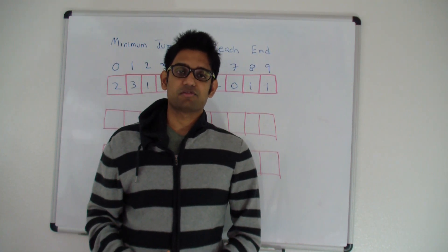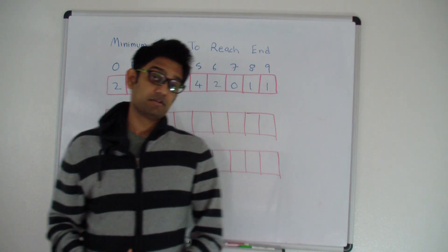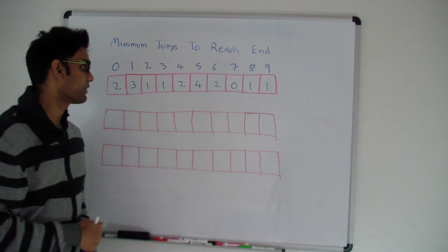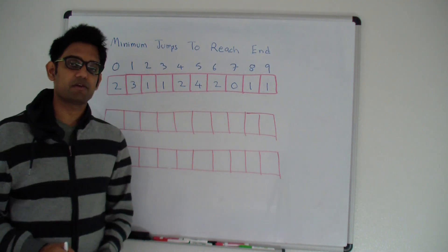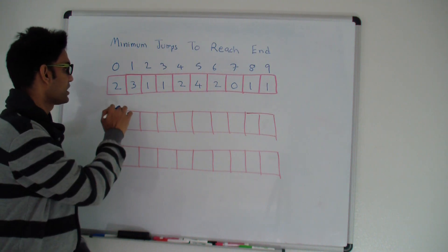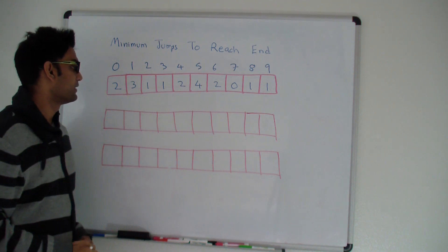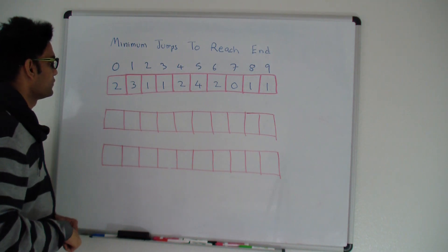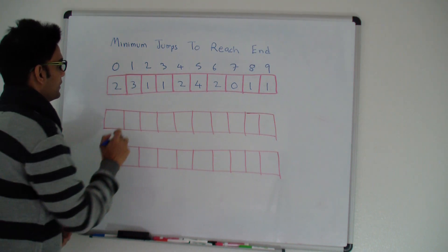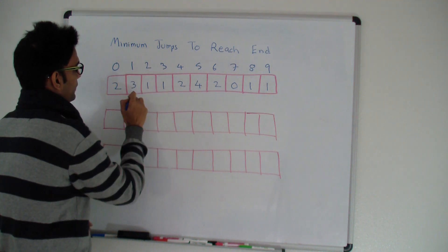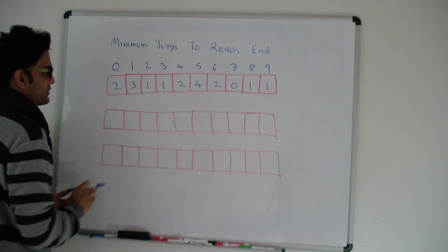Hello friends, my name is Tushar and today we're going to talk about the question: minimum number of jumps to reach the end of an array. Given an array, what is the minimum number of jumps it takes to go from the start to the end of an array, given that you can jump as many steps from a particular point as the value at that point. So what is the minimum number of jumps it'll take to reach index nine?